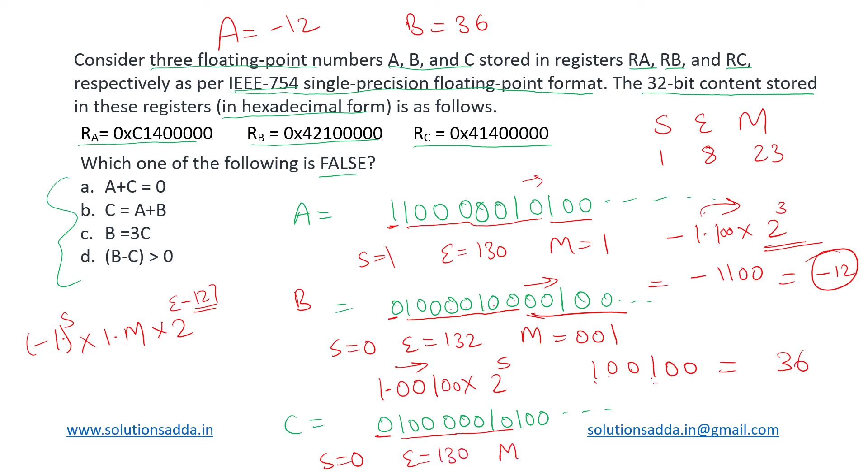And the mantissa is 1. So what will this be evaluated to? 1.1 into 2 to the power 130 minus 127, which is 3. So we add two zeros and then shift three places to the right. It becomes 1100, which is 12. So C is evaluated to 12.